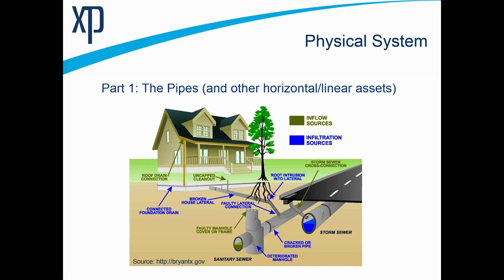First up is pipes and the other horizontal or linear assets. In this example you can see a true separated system — you can see the storm sewer system. We're going to avoid the stormwater side and stay strictly in the sanitary side. Some of you may have combined sewers, but since that's a different set of issues, we'll talk just about the separate sanitary sewer. You can also see cracks in the pipe, which is more of the main line that usually runs parallel to a road. You can see the clean out and the lateral — this is showing a pretty broken connection having been in the ground for some amount of time.